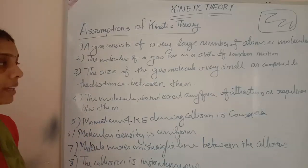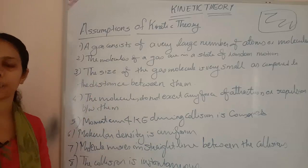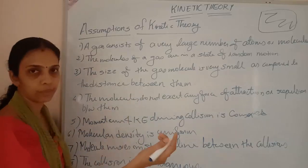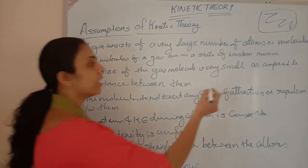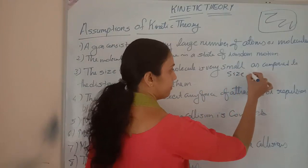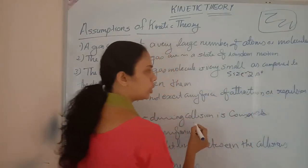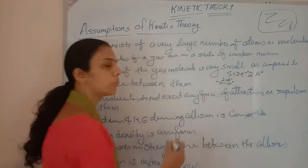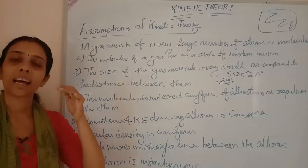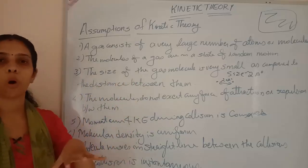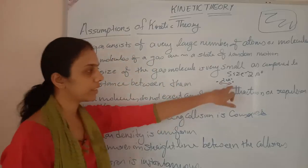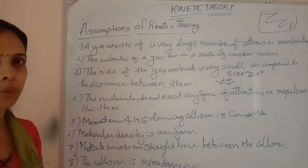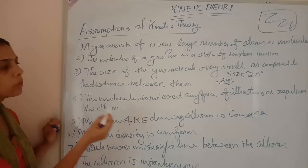The next assumption is that the size of a gas molecule is very small compared to the distance between them. The size of a molecule is of the order of angstroms — about 2 angstroms — but the distance between molecules is about 20 angstroms. So the size is very small compared to the intermolecular distance.